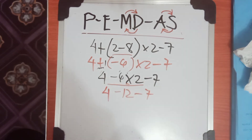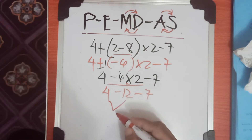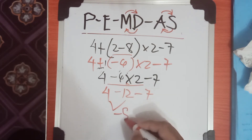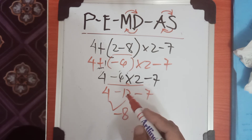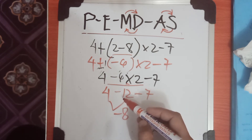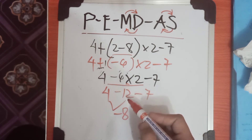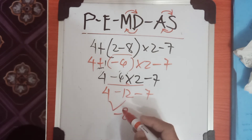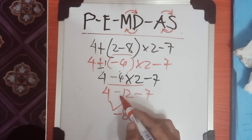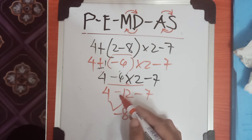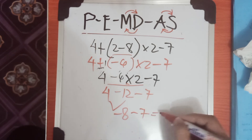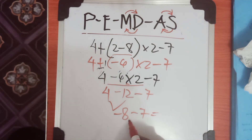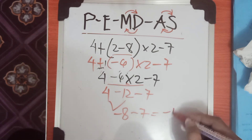Now we use the order of operations from left to right for addition and subtraction. We have negative 12 and positive 4. For addition and subtraction, always copy the sign of the greatest number. Since 12 is greater than 4, we copy the negative sign from 12. The answer is negative 12 plus 4, which gives negative 8. So the final answer is negative 8.